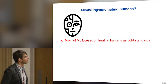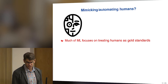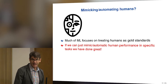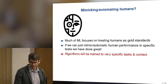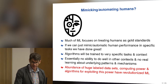Much of ML focuses on treating humans as gold standards because they're really good at pattern recognition. If we can mimic human performance in specific tasks, then we've done fantastic. The algorithms would be trained to that specific task, but they won't do well in other contexts and there's no learning about underlying mechanisms — but that's okay if we're targeted for that task.